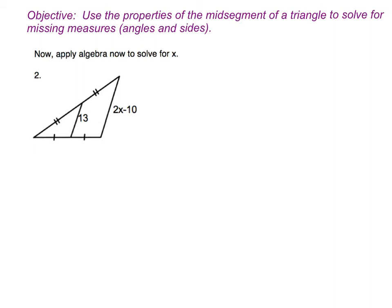Most of you now know that the relationship between the mid-segment of a triangle and the side that it's parallel to is that it's half the length. So if I try to put that into an equation, I'm literally going to write exactly what I just said: 13, my mid-segment, is equal to one half the length of the third side, which is 2x minus 10.